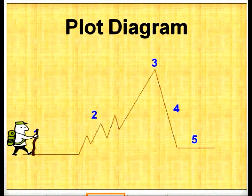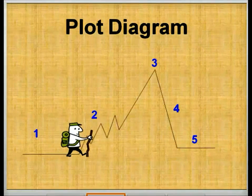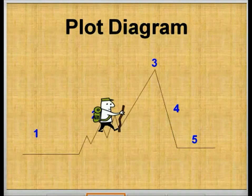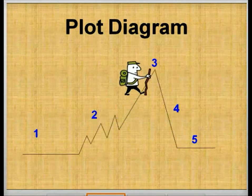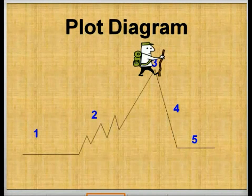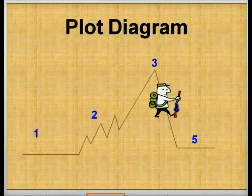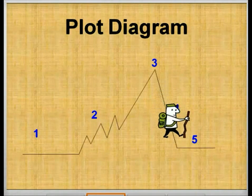Here we have Bob taking us on that journey once more. You have the exposition, which is number one and includes the inciting incident. Then you have the rising action, which is number two. The climax, which is number three. The falling action, which is number four. And the resolution, which is number five.